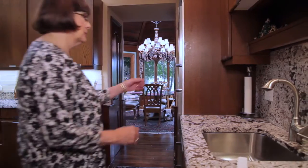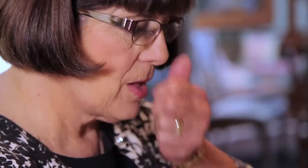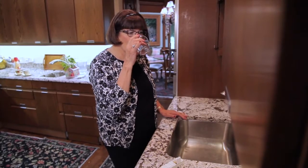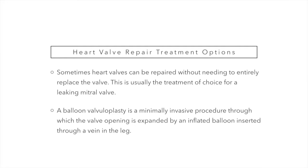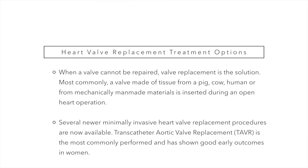Heart valve disease treatment is really quite varied. For the most part, you cannot cure the disease that exists on the valve — it may progress over time or stay stable. Treatment is geared towards the symptoms it's causing. You might require a water pill for fluid buildup, or medications to control heart rhythm, or a blood thinner to prevent clots. But if that valve disease progresses and symptoms can no longer be relieved with medications, the only way to fix it is surgical correction.